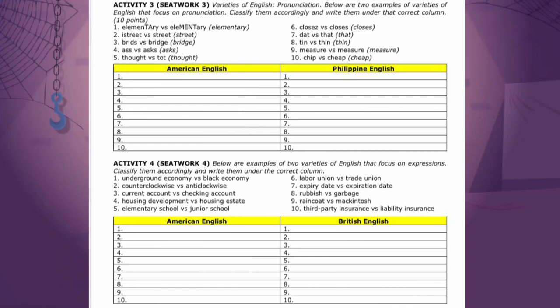For Activity Number 4, below are examples of two varieties of English that focus on expressions. Classify them accordingly and write them under the correct column — American English or British English. The pairs are: 1) underground economy vs. black economy; 2) counterclockwise vs. anti-clockwise; 3) current account vs. checking account; 4) housing development vs. housing estate; 5) elementary school vs. junior school; 6) labor union vs. trade union; 7) expiry date vs. expiration date; 8) rubbish vs. garbage; 9) raincoat vs. mackintosh; and 10) third-party insurance vs. liability insurance.